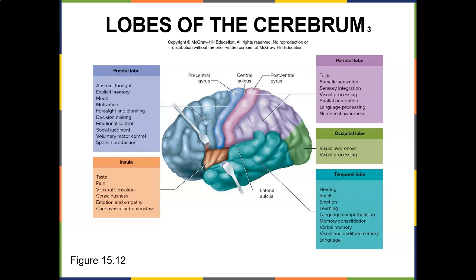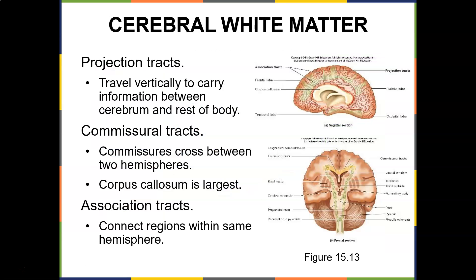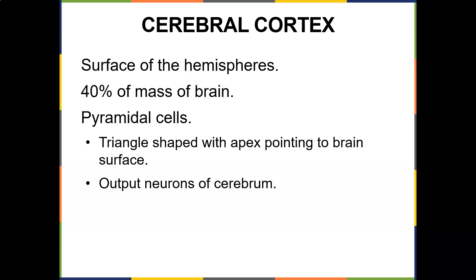Cerebral white matter: projection tracks travel vertically to carry information between the cerebrum and the rest of the body. Commissural tracks cross between the two hemispheres — the corpus callosum is the largest commissure, connecting the right and left hemisphere. The cerebral cortex, which is the surface of the hemispheres, is 40% of the mass of the brain. Pyramidal cells are triangle-shaped with the apex pointing inward — these are the output neurons of the cerebrum.